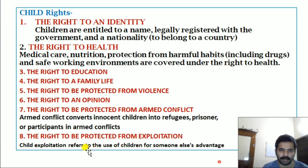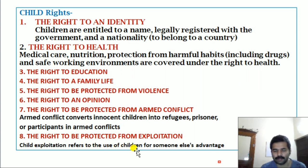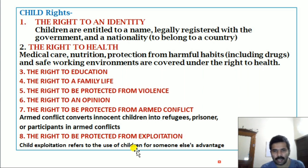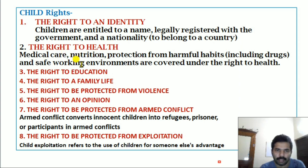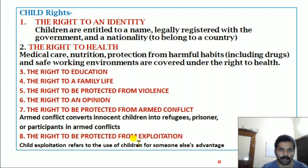The right to be protected from exploitation: child exploitation refers to the use of children for someone else's advantages. So somebody using children for their own advantage is child exploitation. To summarize, child rights are: right to an identity, right to health, right to education, right to a family life, right to be protected from violence, right to an opinion, right to be protected from armed conflict, and right to be protected from exploitation.